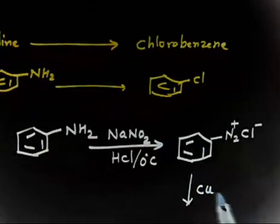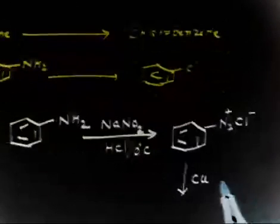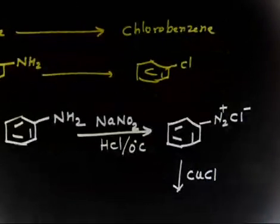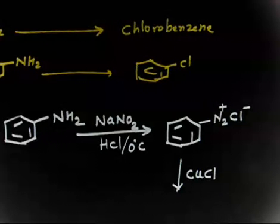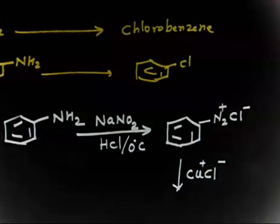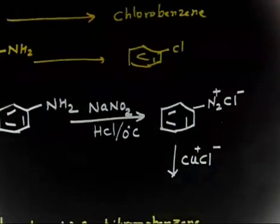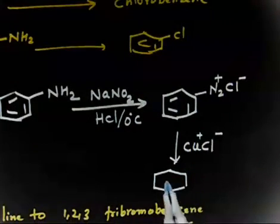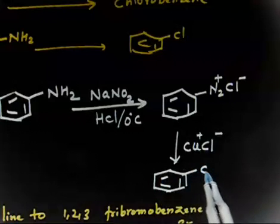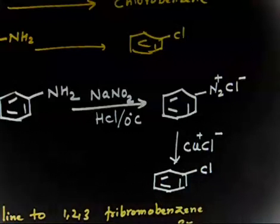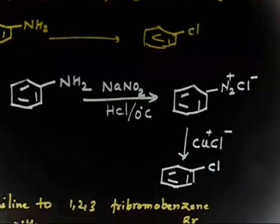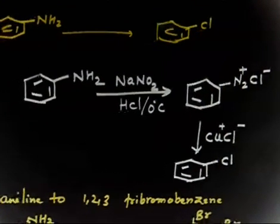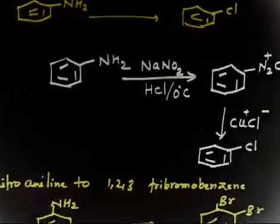In the next step, the diazonium cation is treated with CuCl — copper chloride (Cu+ Cl−). Adding this compound gives chlorobenzene: the Cl− attacks the diazonium ion and a Cl group is added to the ring. This is a one-step, easy conversion.